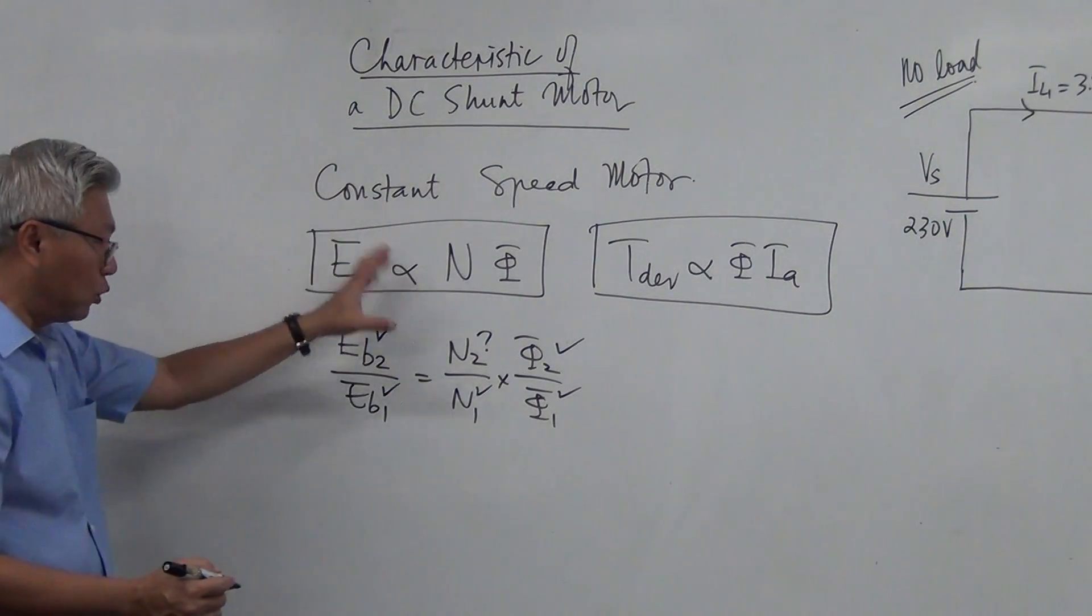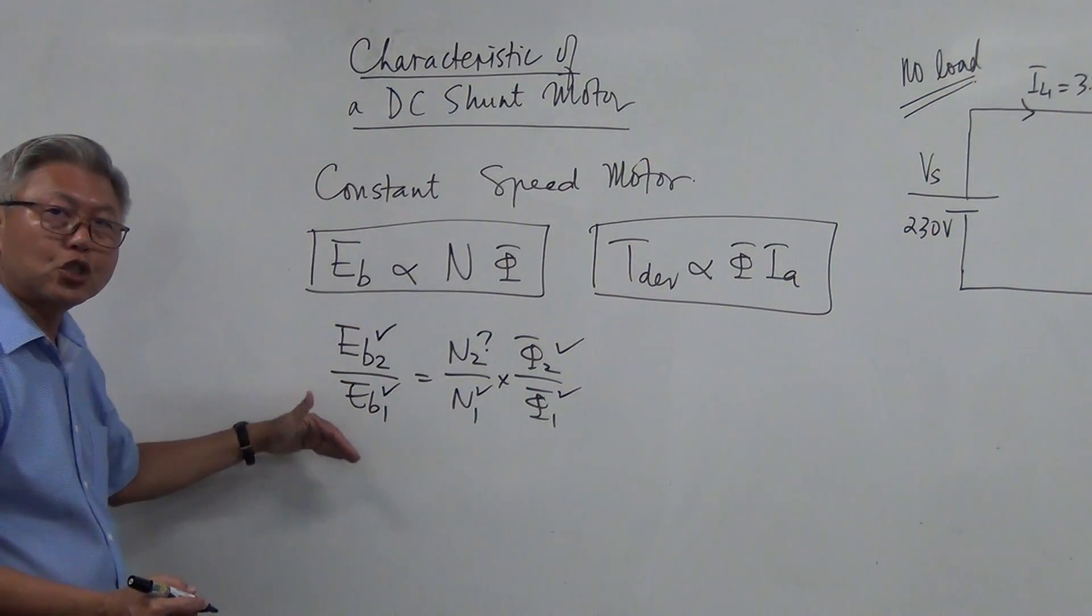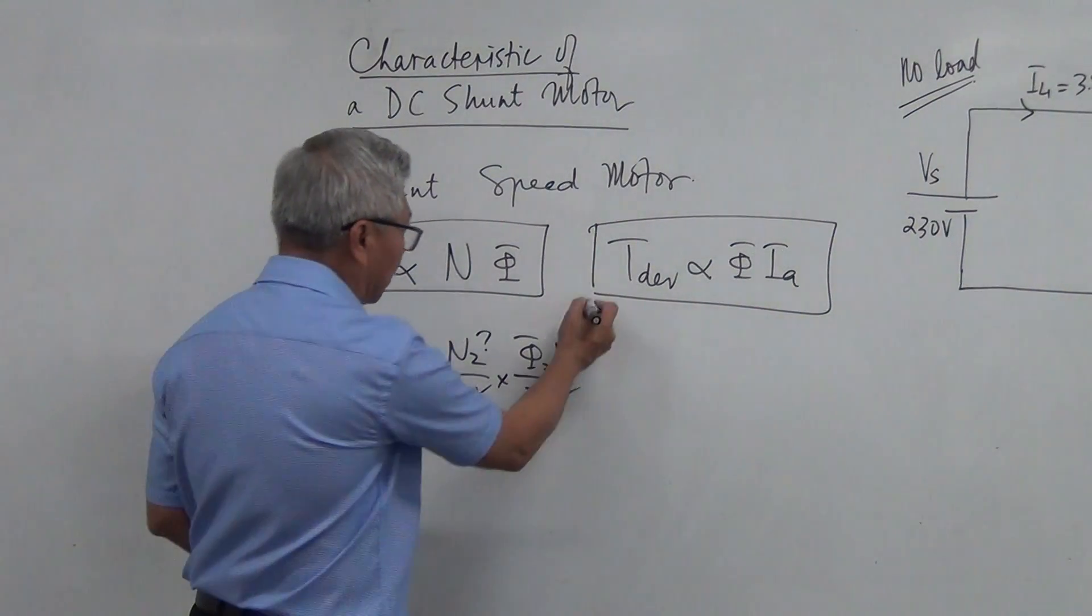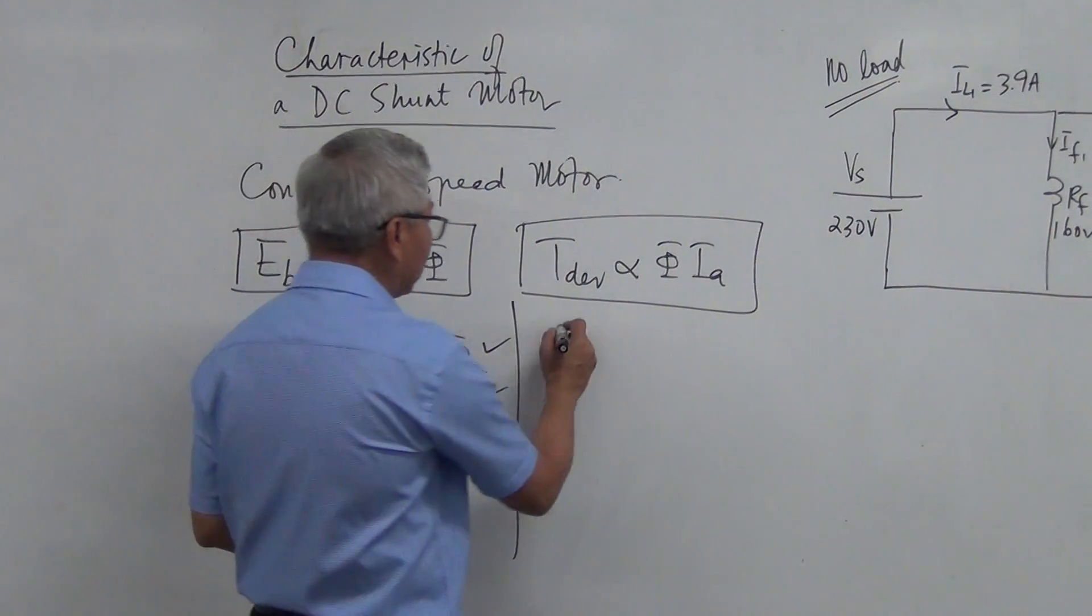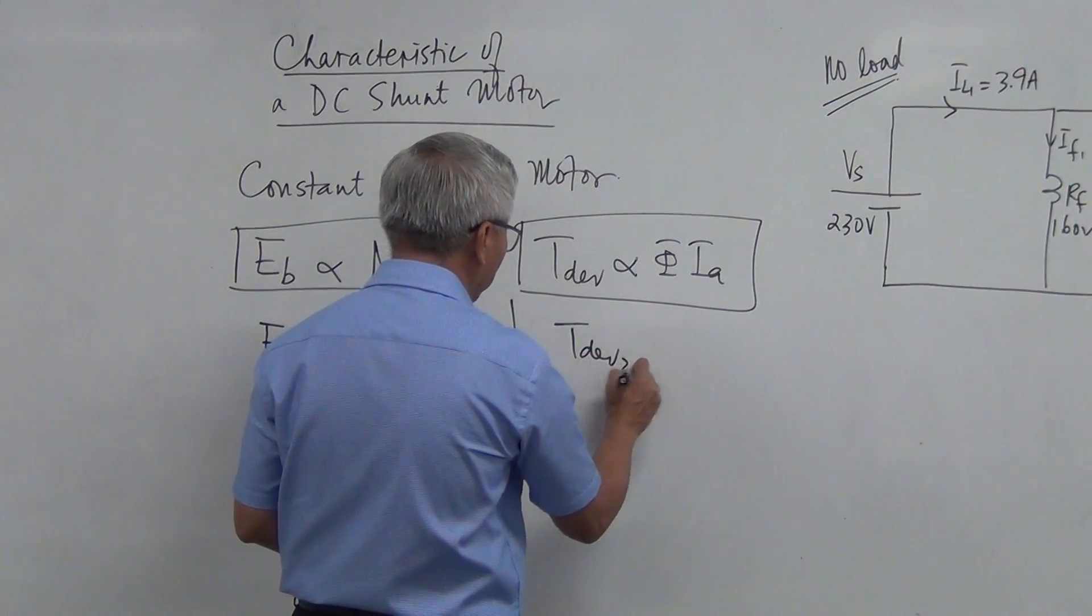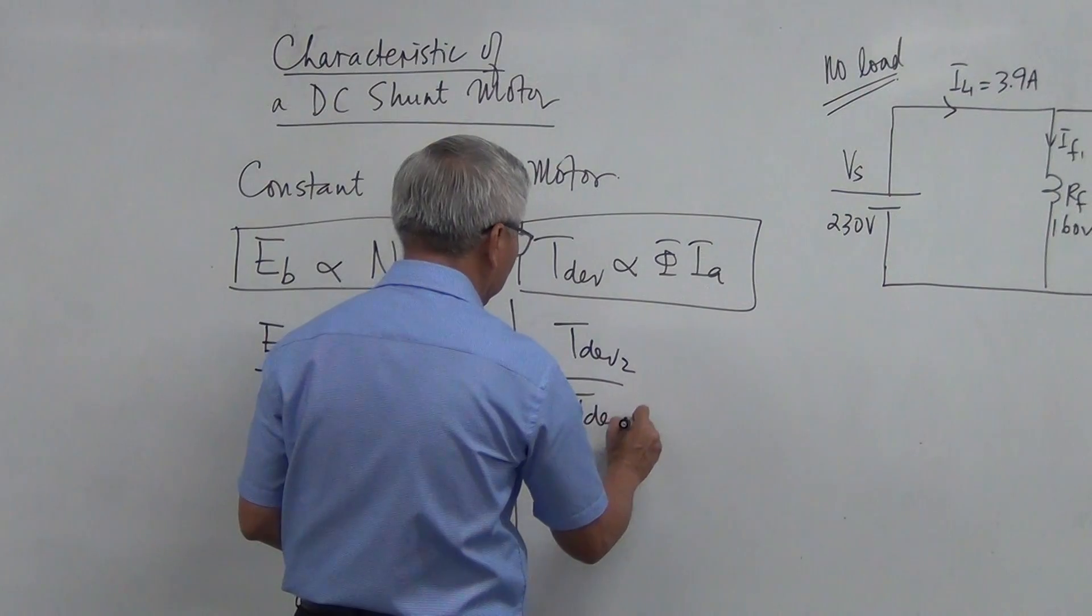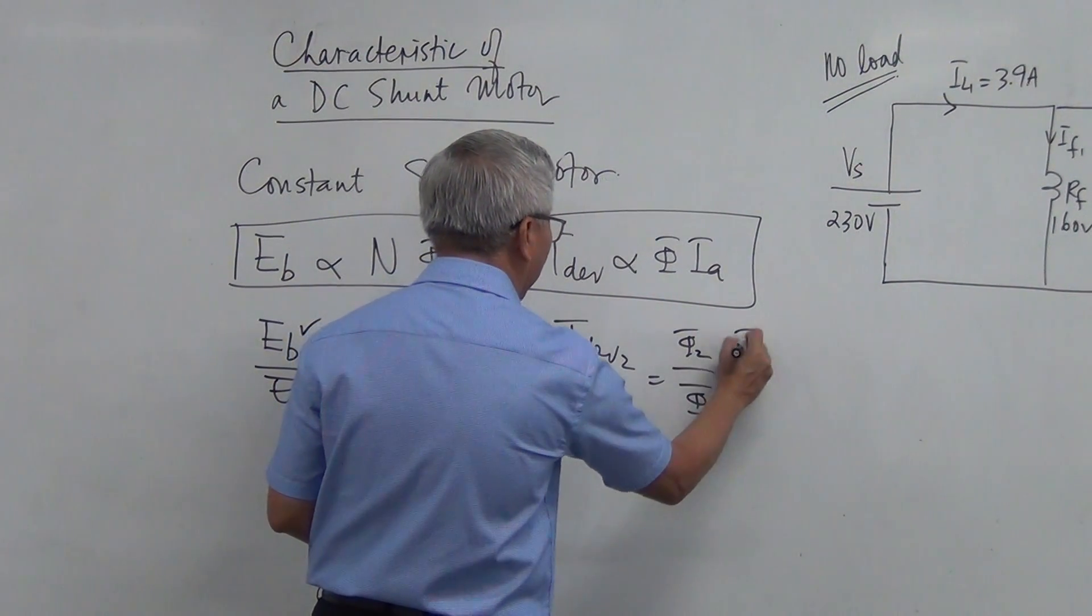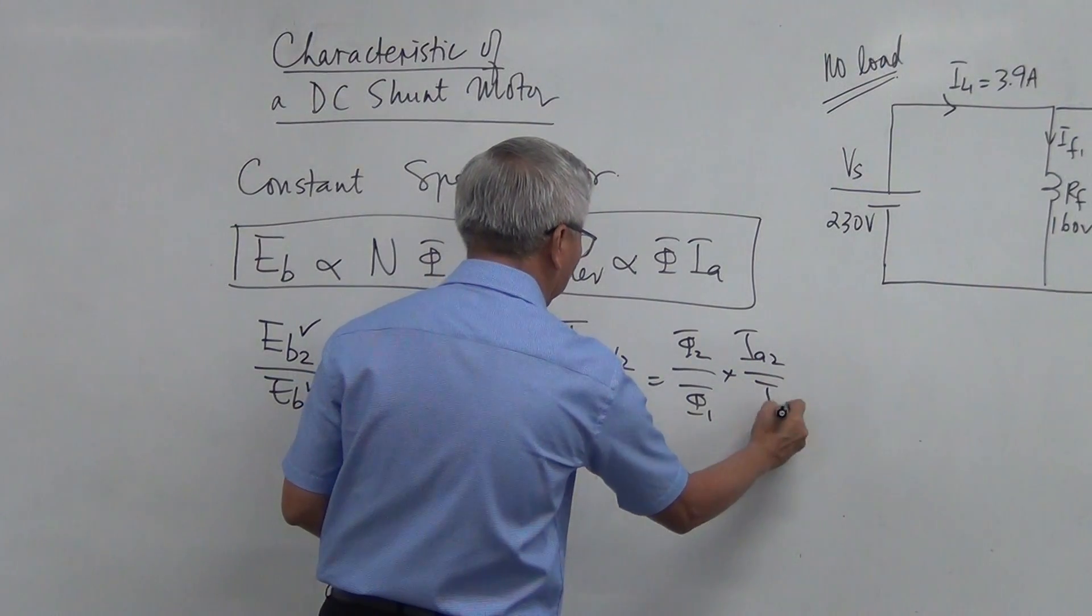We are going to make use of this proportional relationship to do our mathematics later. The next one is torque is proportional to flux Ia. Now that makes it into torque developed 2 over torque developed 1 equal to flux 2 over flux 1 and Ia2 over Ia1.